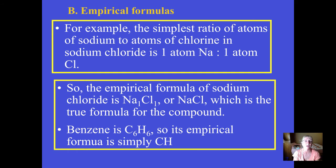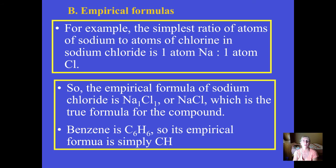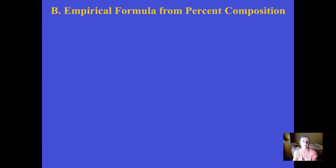We're going to find empirical formulas, which essentially involves doing some math — some dividing and working with ratios — to find the small whole numbers that go to the bottom right of each element symbol. Those are the subscripts.